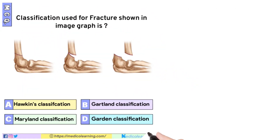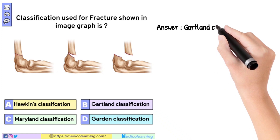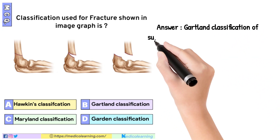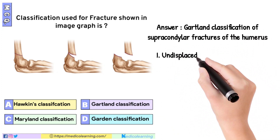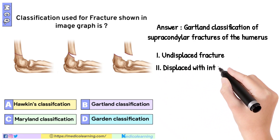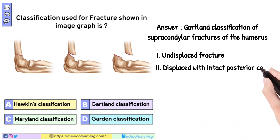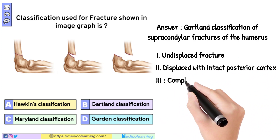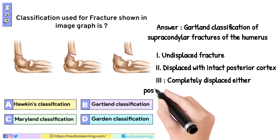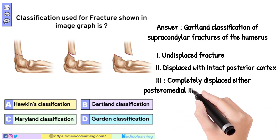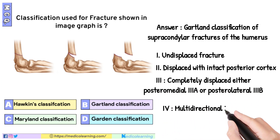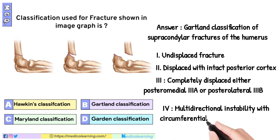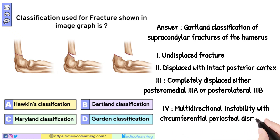In this question, the answer is the Gartland classification of supracondylar fractures of the humerus: 1. Undisplaced fracture. 2. Displaced with intact posterior cortex. 3. Completely displaced — either posteromedial (3A) or posterolateral (3B). 4. Multidirectional instability with circumferential periosteal disruption. Thank you for watching.